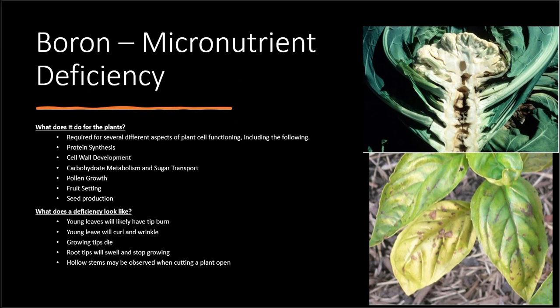What does a boron deficiency look like? On your young leaves you may see tip burn. The younger leaves will also curl and wrinkle, and growing tips will die — the very end of your leaf will start to turn brown. Root tips will swell and stop growing. If you're growing in DWC, you can pull those roots out and look at them — you may need a magnifying glass, but you can see that they're swelling and have quit growing.